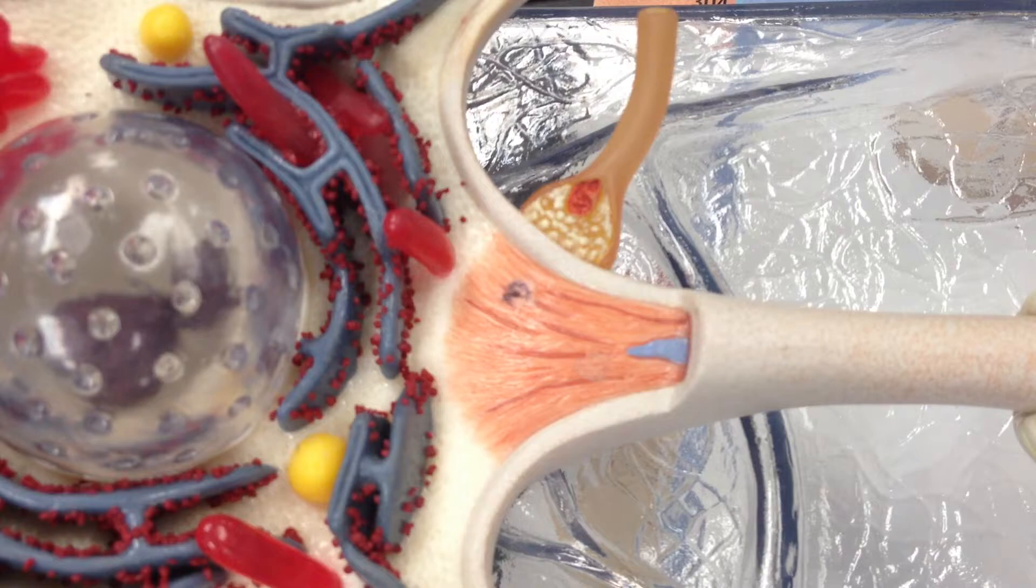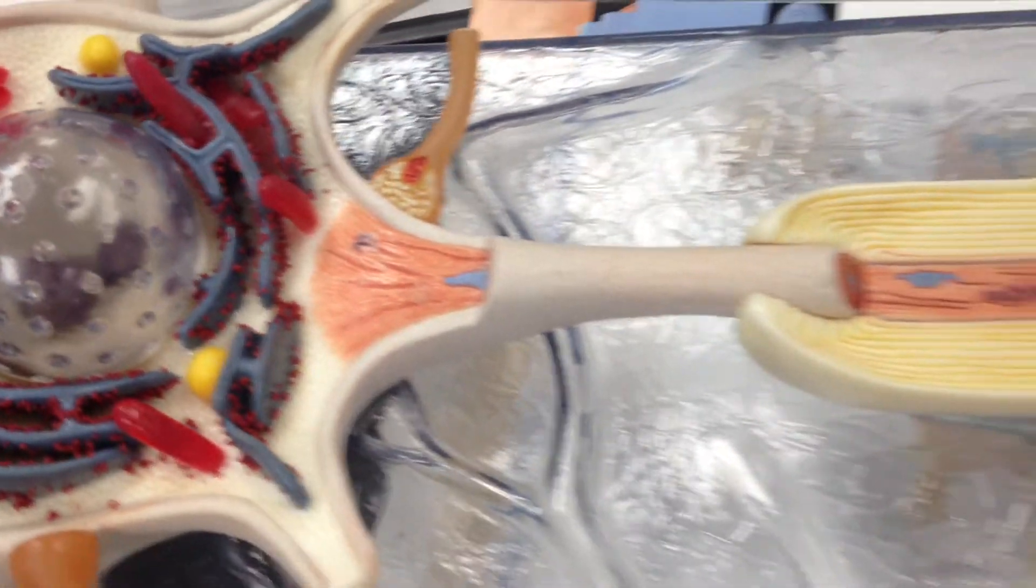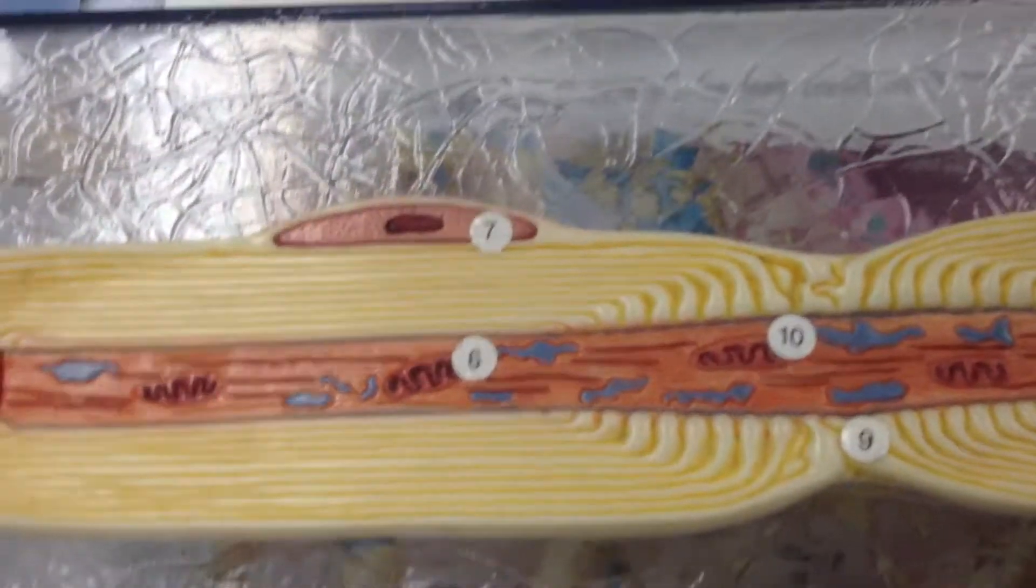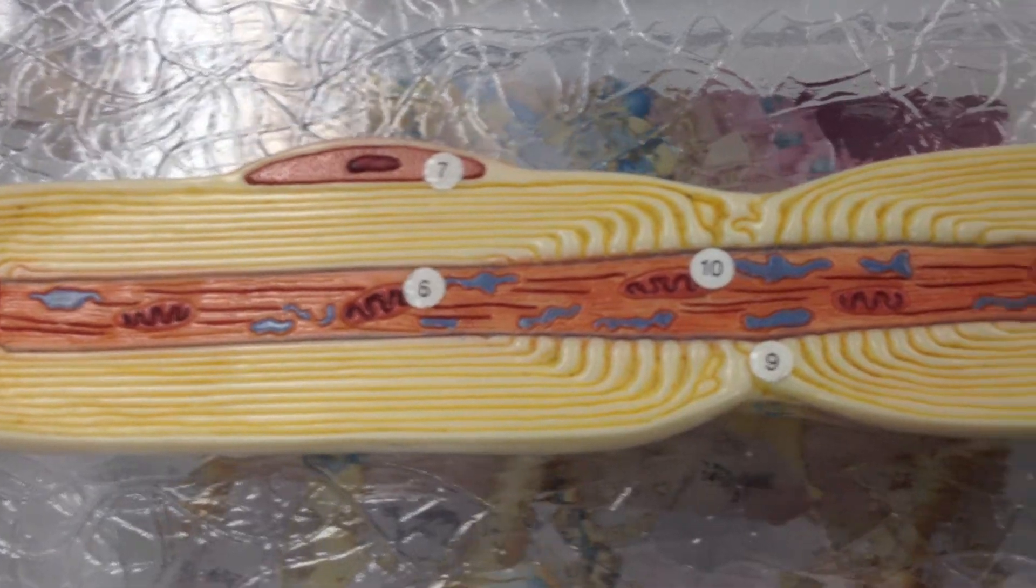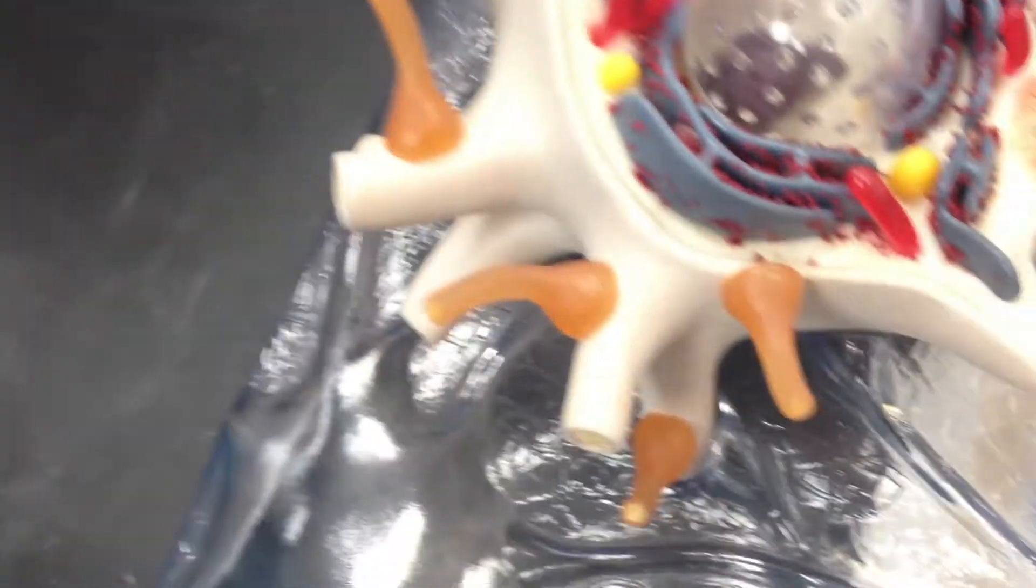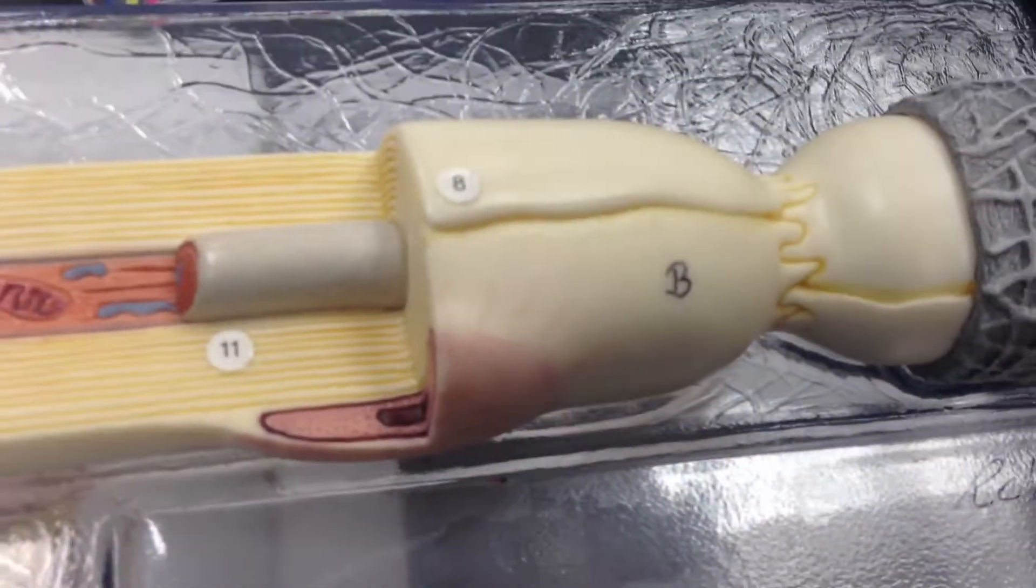Axon hillock, number three. Axon. Axon is number six. And then the synaptic terminal is not shown, but those are the fingers of it. Okay, thank you.